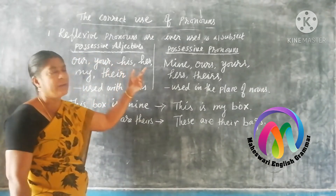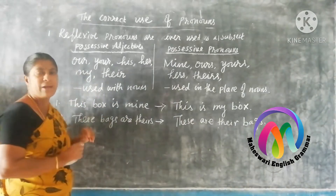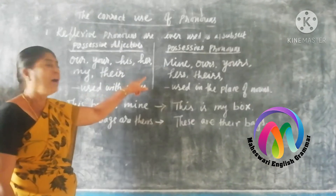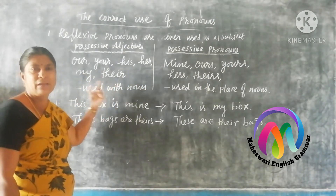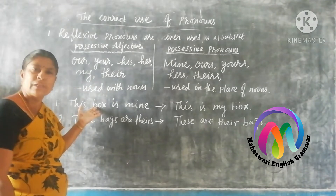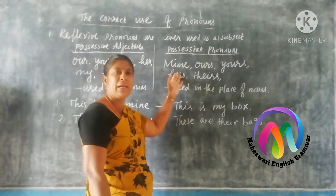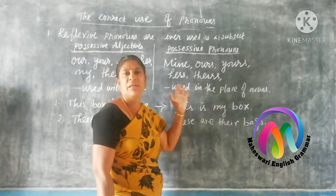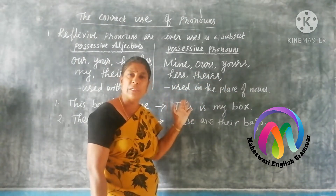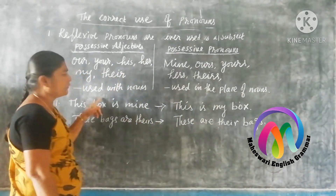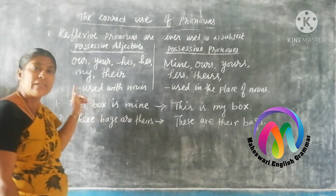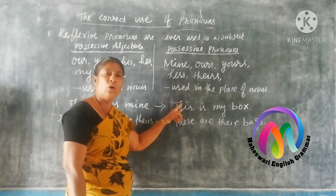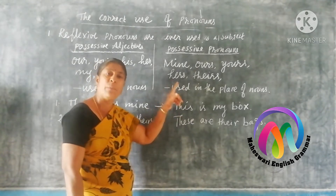Now, possessive adjectives and possessive pronouns. The possessive adjectives are: our, your, his, her, my, that. These are all called possessive adjectives. And my, ours, yours, hers, that — these are called possessive pronouns. See the difference: possessive adjectives are always used with a noun, but possessive pronoun is used in the place of a noun.